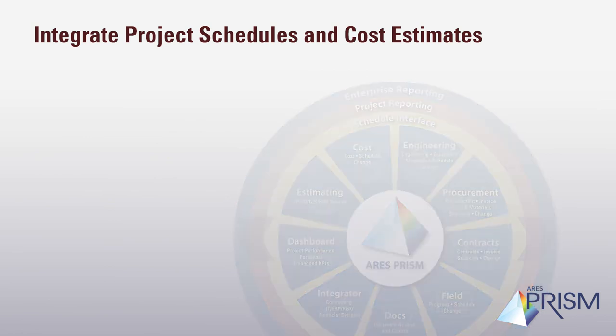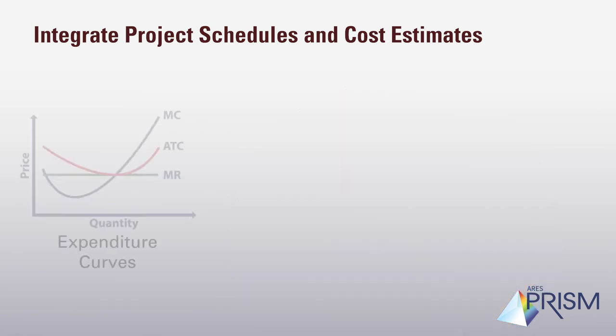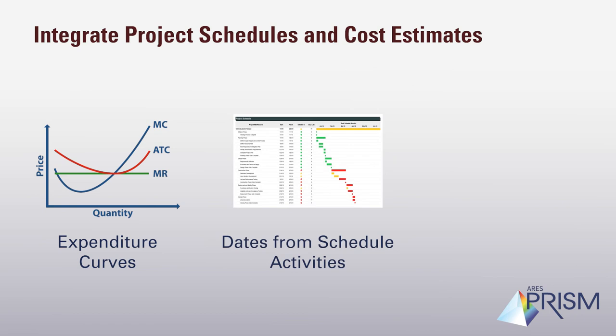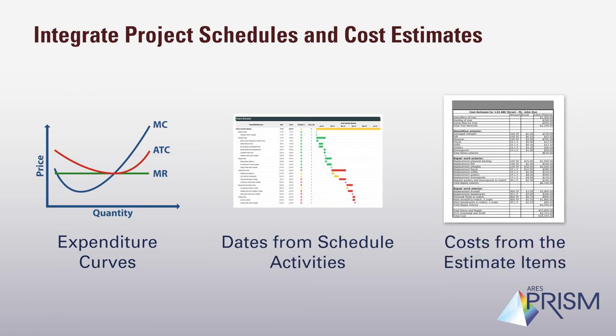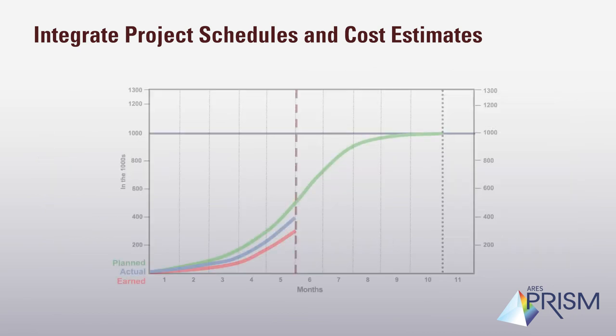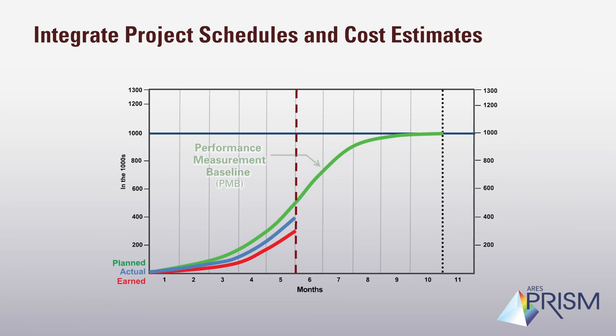Prism Cost uses expenditure curves assigned to a control account, dates from schedule activities, and costs from the estimate items to produce a time-phase budget. This time-phase budget is then saved as the performance measurement baseline, against which progress will be measured.